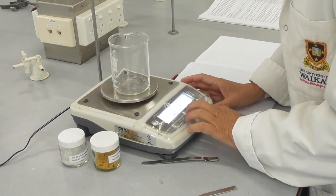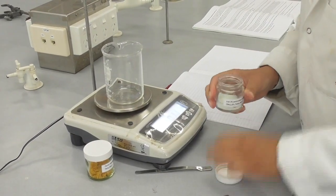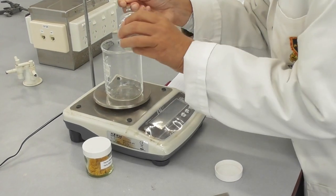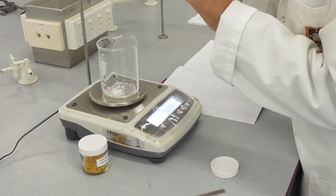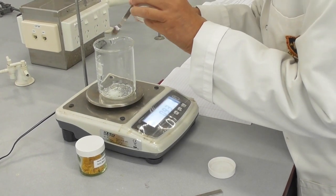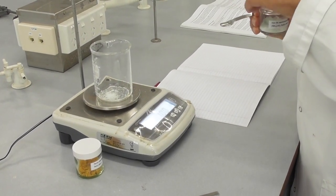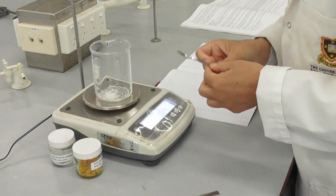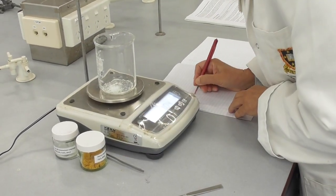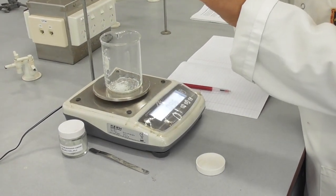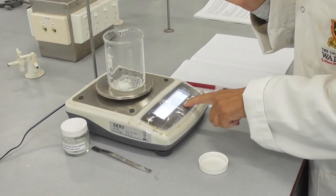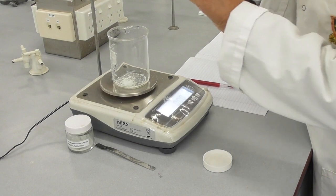I start by weighing the two iron salts into a 400 milliliter beaker. First I add 1.00 grams of ammonium iron sulfate into the beaker. Then I need to weigh out 1.38 grams of the second iron compound, which is iron chloride.